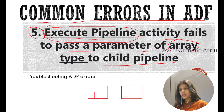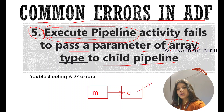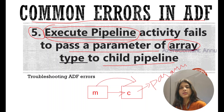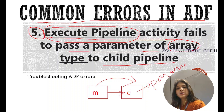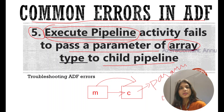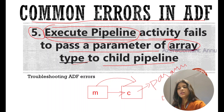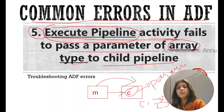Suppose you have a master pipeline calling a child pipeline. The child pipeline expects a parameter to complete execution and that parameter value needs to be passed from the master pipeline. Parameters in data factory can be of different data types - string, integer, or array. If the child pipeline expects a string or integer, there are mostly no issues, but if it expects an array data type, you may end up with this error. If you provide the value in array format, it will actually treat it as a string and throw this error.